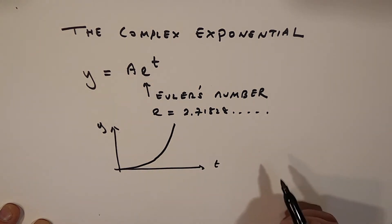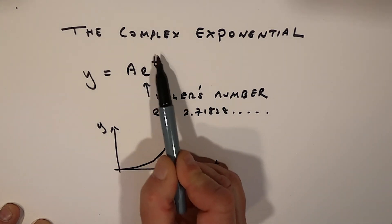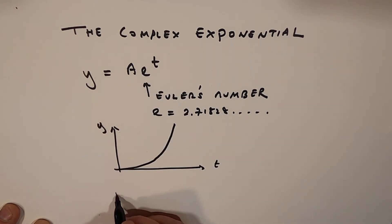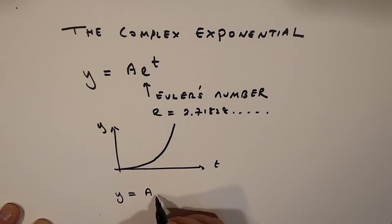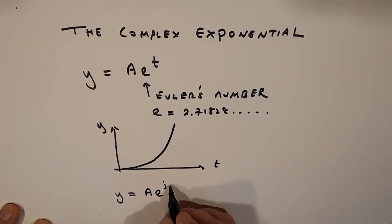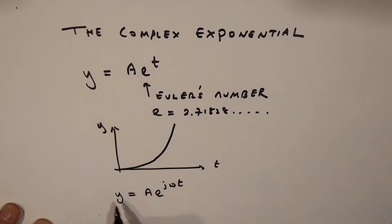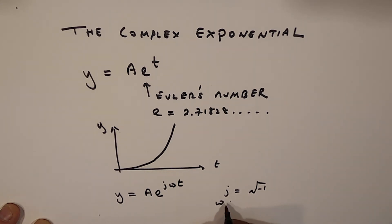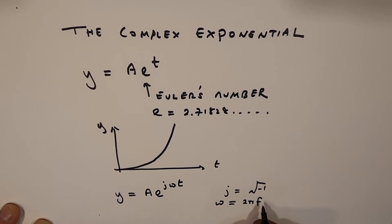What we want to do is replace the exponent t with a complex number. So we're going to rewrite this and say y equals a·e^(jωt). This is the complex exponential. Here j is equal to the square root of minus one, and ω is the angular frequency, which is equal to 2πf, where f is frequency in hertz.